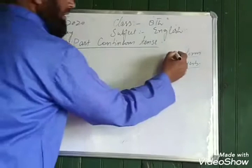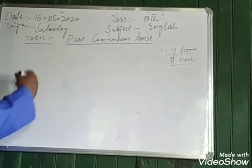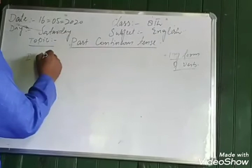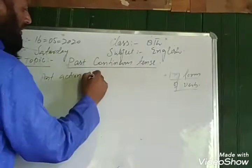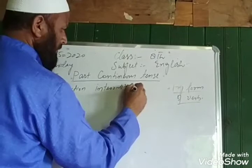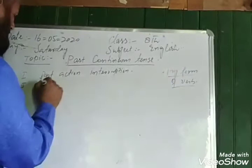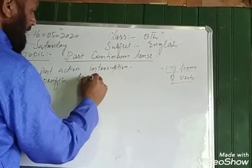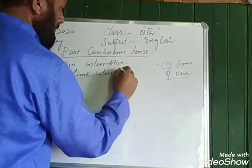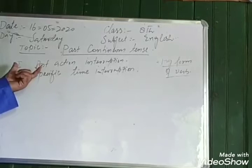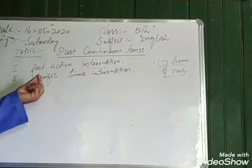But in the last lecture, I have told you that there are some situations where we can use this past continuous tense. The first situation is past action interruption. And the second is specific time interruption.